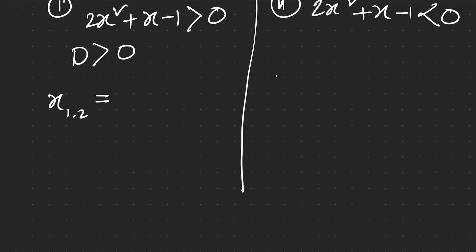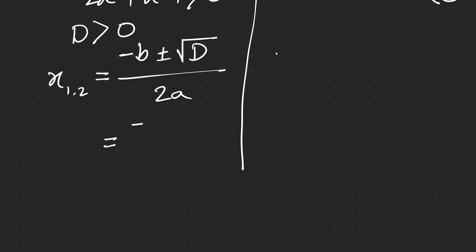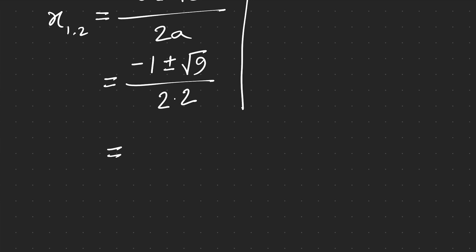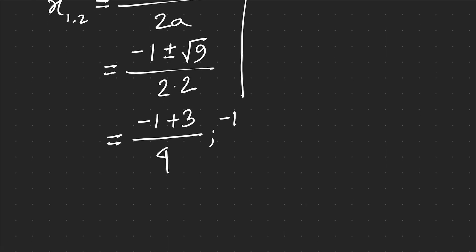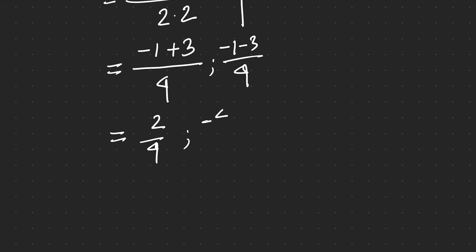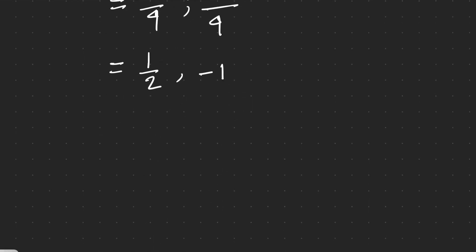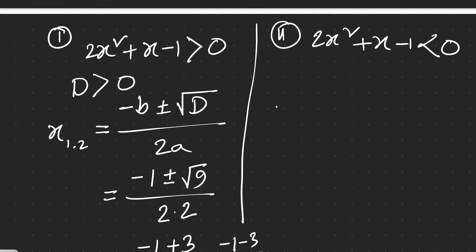Since D > 0, let's find the values of x₁ and x₂ using the quadratic formula: x = (−b ± √D) / 2a = (−1 ± √9) / (2·2) = (−1 ± 3) / 4. Taking the plus sign: (−1 + 3)/4 = 2/4 = 1/2. Taking the minus sign: (−1 − 3)/4 = −4/4 = −1. So x₁ = −1 (the smaller root) and x₂ = 1/2.